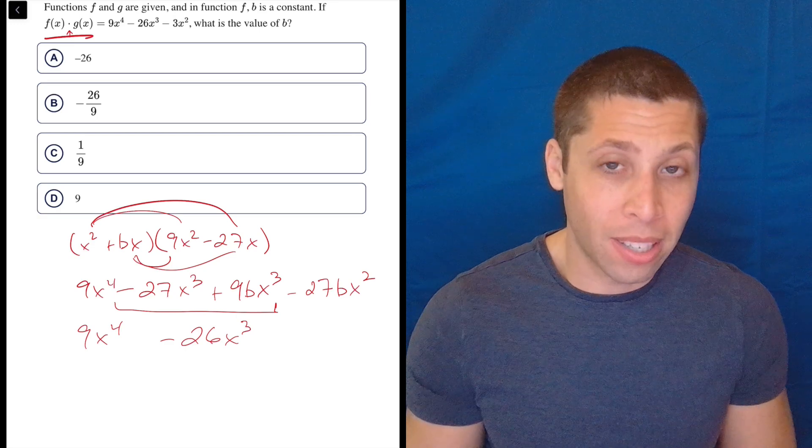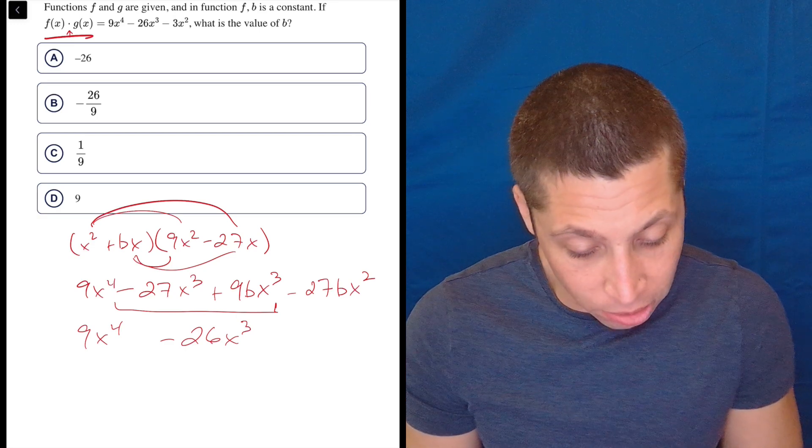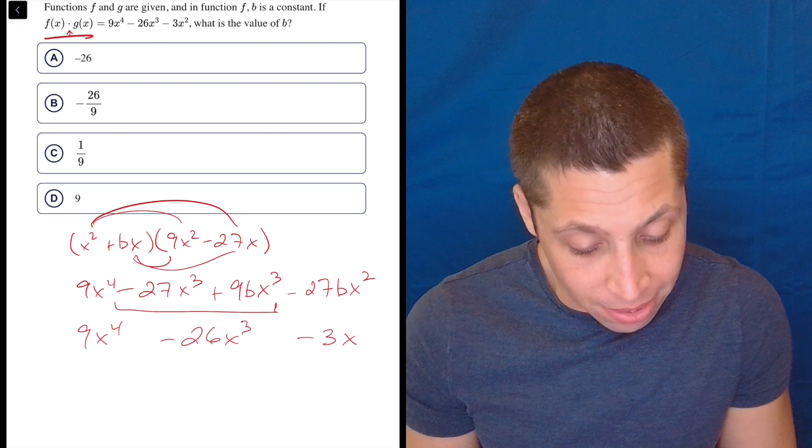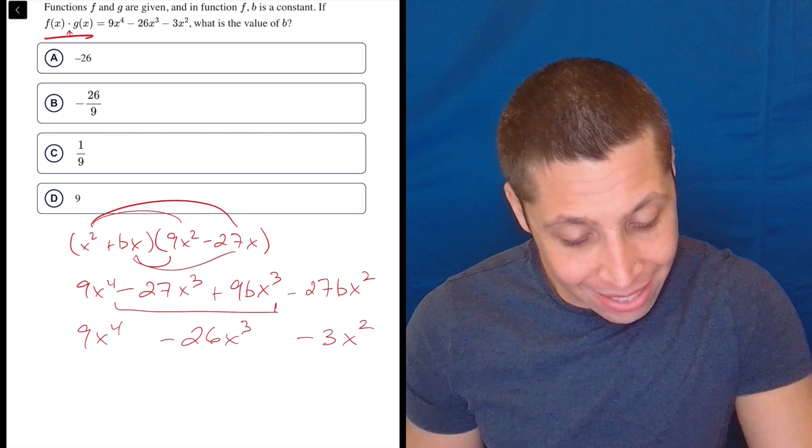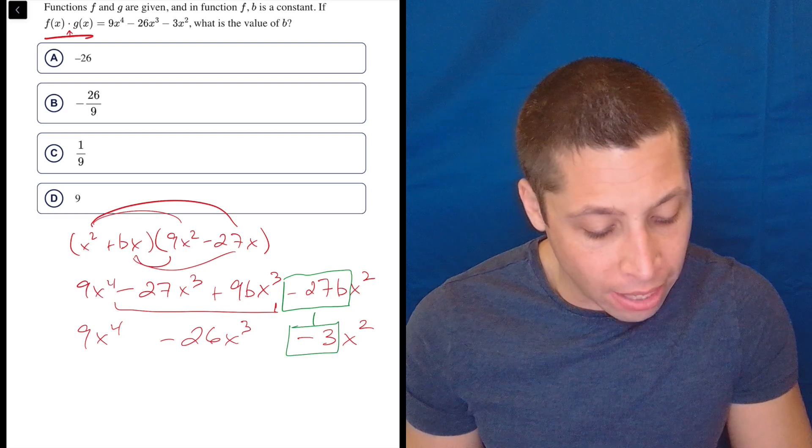but the negative 26 is what we would get, so we can use that to our advantage, or we can just recognize there's only one x^2 term, and it's negative 3x^2. So what has to happen here is this negative 27b has to equal negative 3.